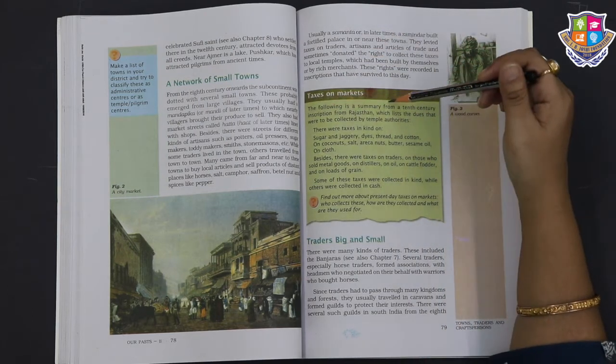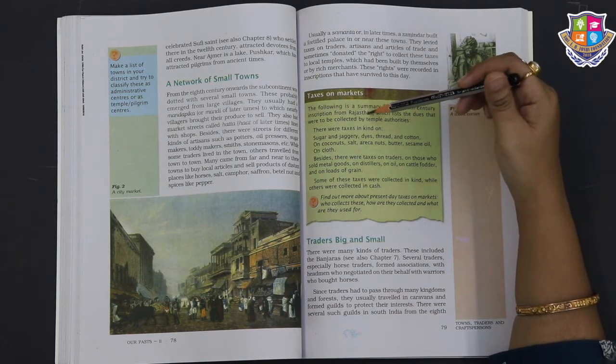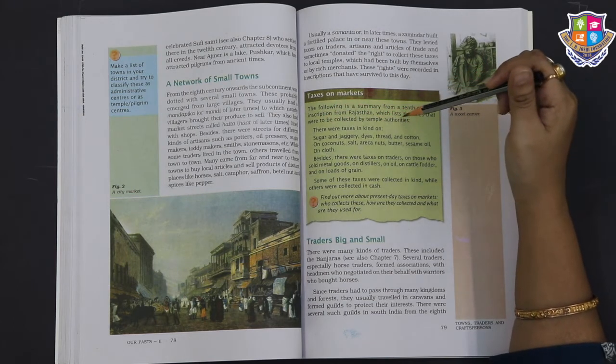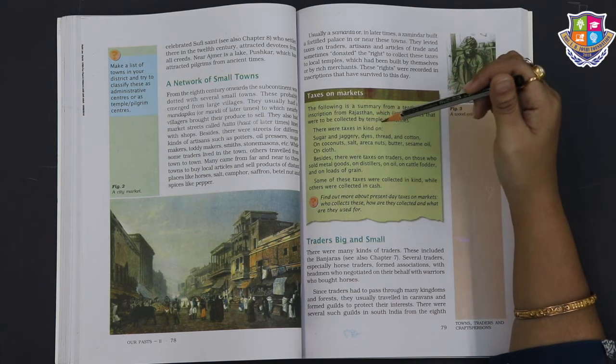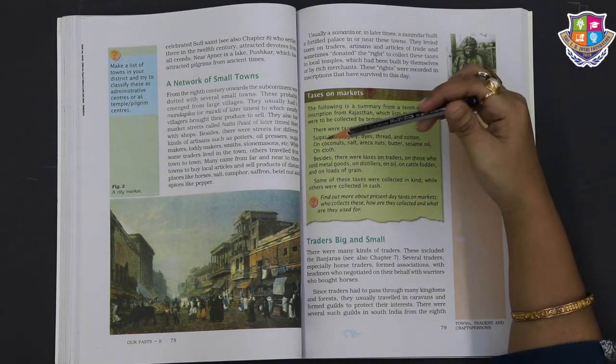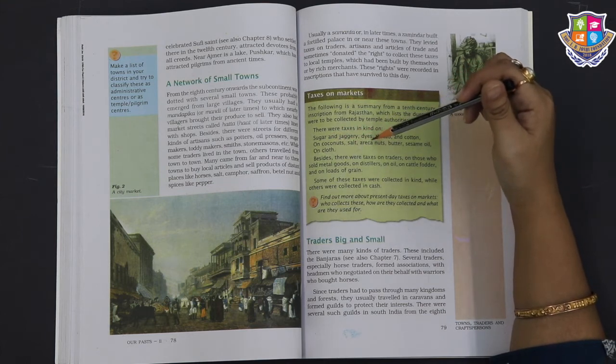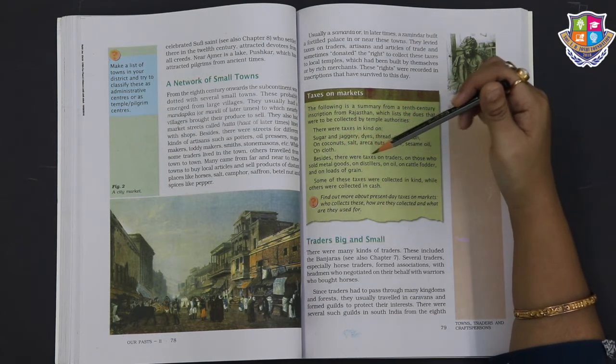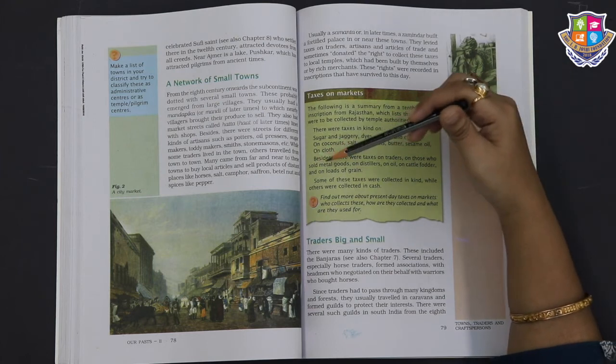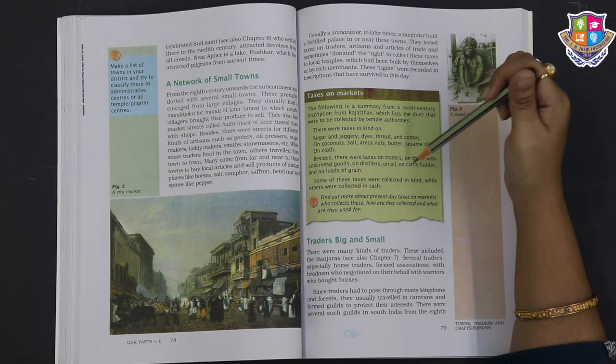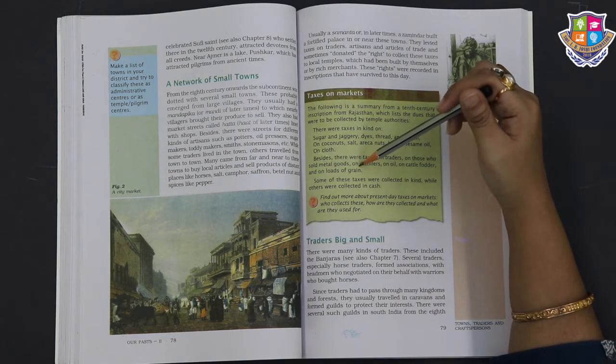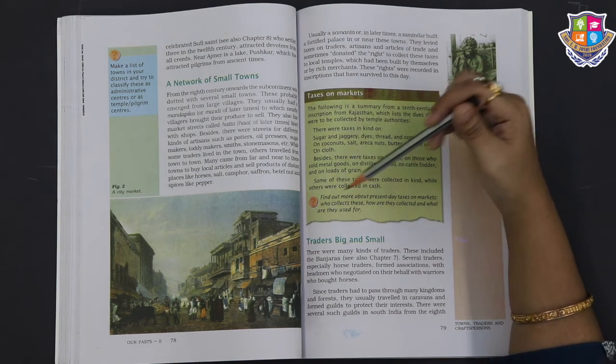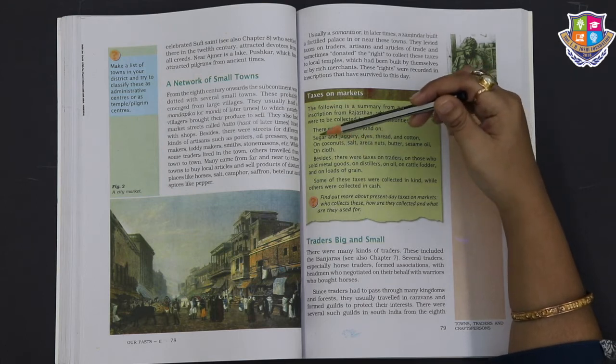Taxes on markets. The following is a summary from a 10th century inscription from Rajasthan, which lists the dues that were to be collected by temple authorities. There were taxes in kind of sugar and jaggery, rice, thread and cotton, on coconuts, salt, areca nuts, butter, sesame oil, on cloth. Besides, there were taxes on traders, on those who sold metal goods, on distillers, on oil, on cattle fodder, and on loads of grain. Some of these taxes were collected in kind, while others were collected in cash.